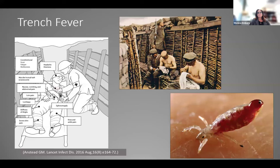Trench fever's causative agent is Bartonella quintana, discovered during World War I. Symptoms include fever, headache, rash, and bone pain, and this is currently emerging in homeless populations throughout the world.